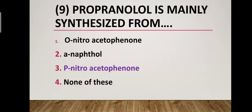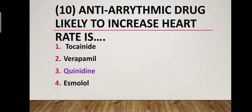Question number nine: Propranolol is mainly synthesized from which precursor? Option one: ortho-nitroacetophenone. Option two: alpha-naphthol. Option three: para-nitroacetophenone. Option four: none of these. Correct answer is option three — para-nitroacetophenone. Propranolol is mainly synthesized from para-nitroacetophenone.